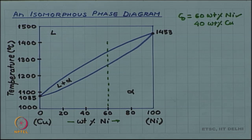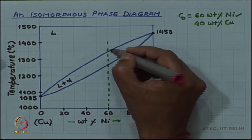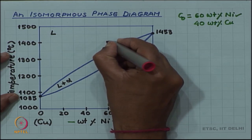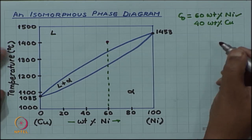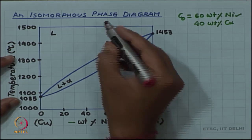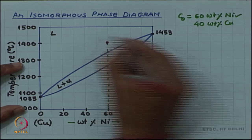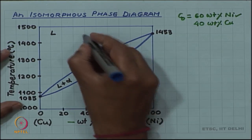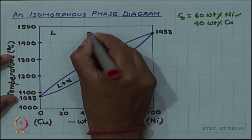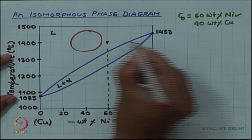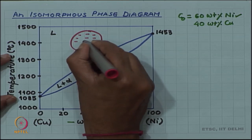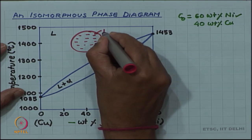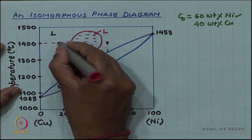If this alloy is at a high temperature — above the liquidus temperature — then the phase diagram tells us that the phase present is the liquid phase. The entire phase will be liquid. If I draw what you will see in a sample, all you will see is liquid. The entire alloy is a liquid phase at this temperature of 1400 degrees Celsius.